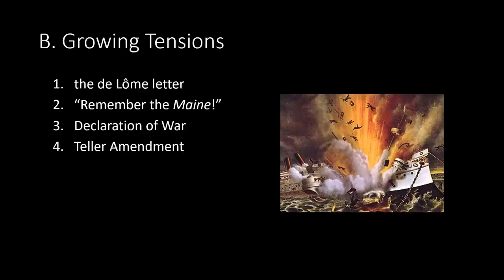Congress was not unanimous in its declaration, as many members feared the US might be perceived as ganging up on a weaker nation to gain territory. To get support for the war, the Teller Amendment — a congressional resolution adopted in 1898 — guaranteed Cuba's independence, stating the United States had no designs on Cuba and calling for Cuban self-government. On April 20, 1898, Congress declared war on Spain; on April 24, Spain declared war on the United States.